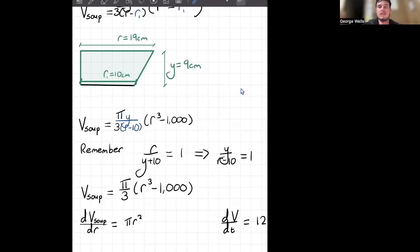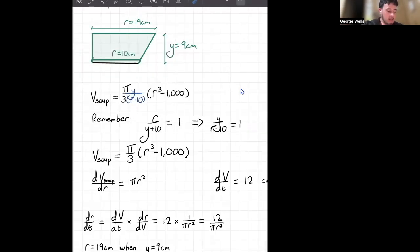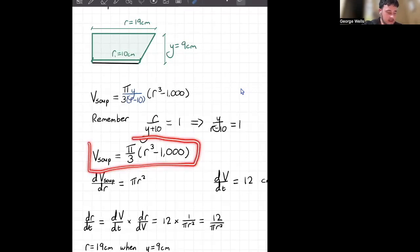So we know that our y over r minus 10 is just equal to 1. We know anything times 1 is just itself. So this essentially just disappears. And we're left with v soup is equal to this.